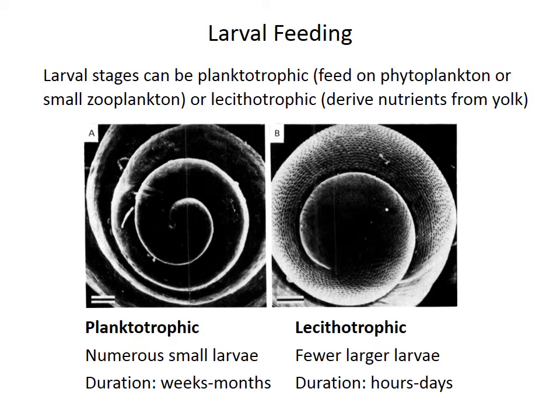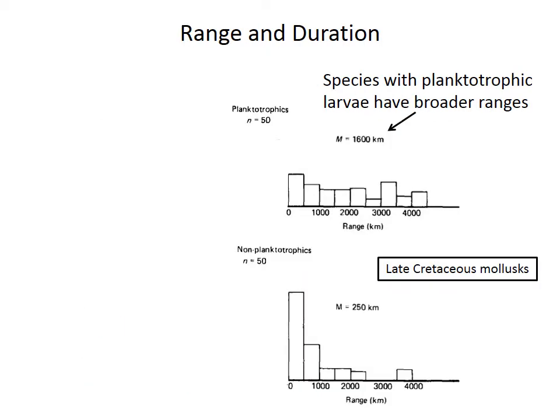Because planktotrophic larvae feed actively, they can float for weeks or even months before settling to the seafloor. Lecithotrophic larvae, in contrast, settle within hours to days because they're constrained by the energy available from the yolk. Those differences in the nutrient source, and especially in the time until settling, have important consequences for the geographic range and geological duration of a species.